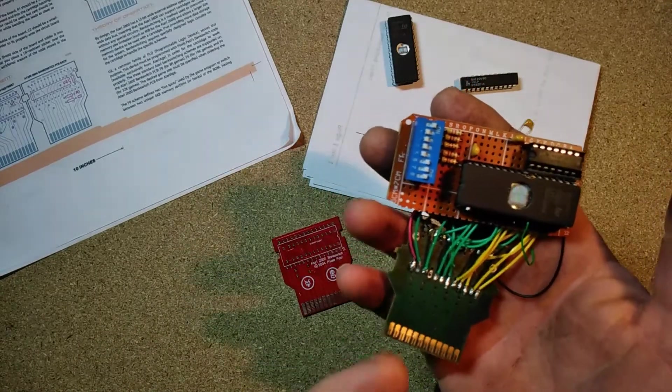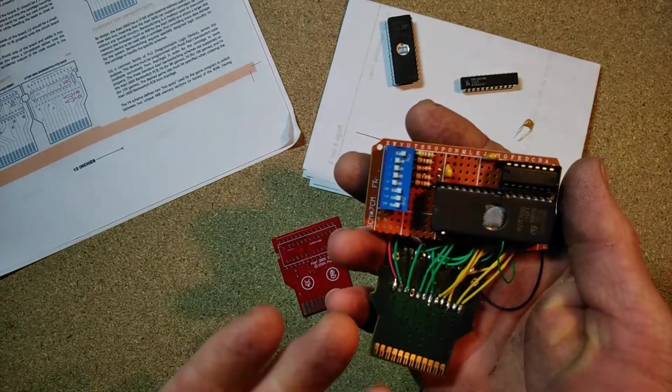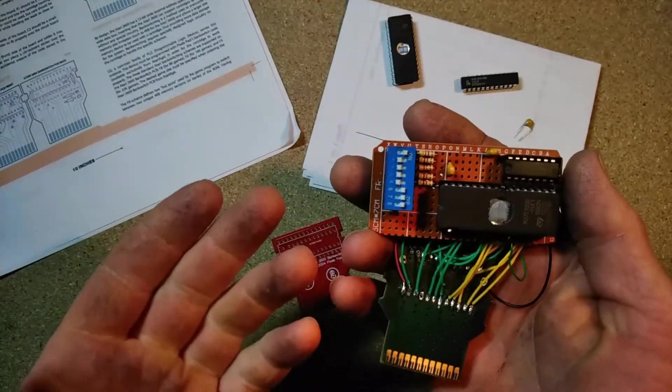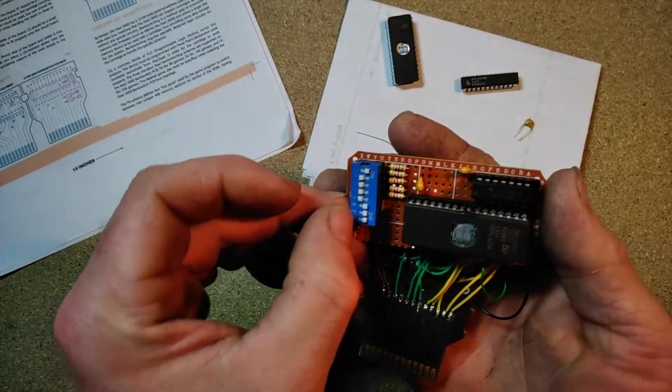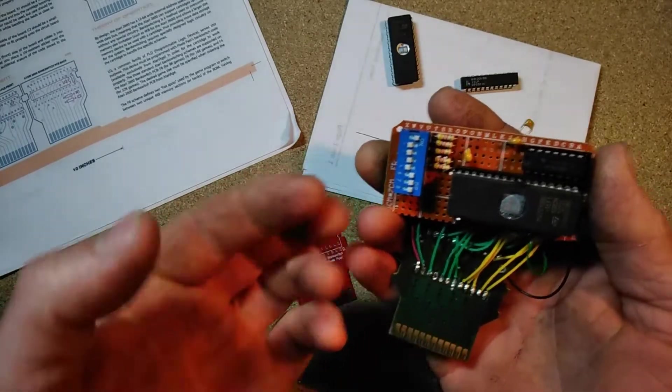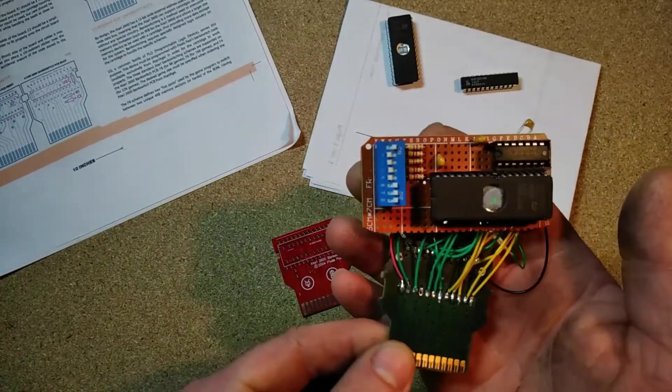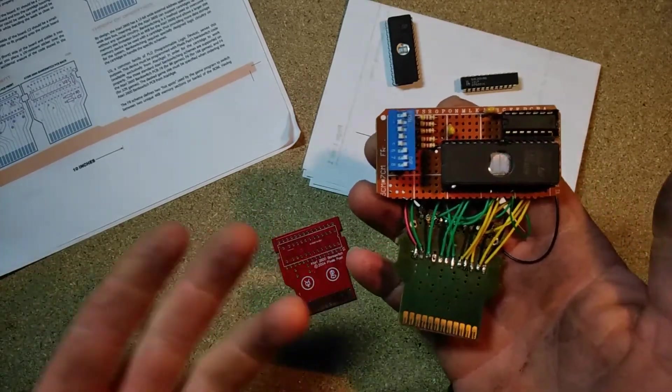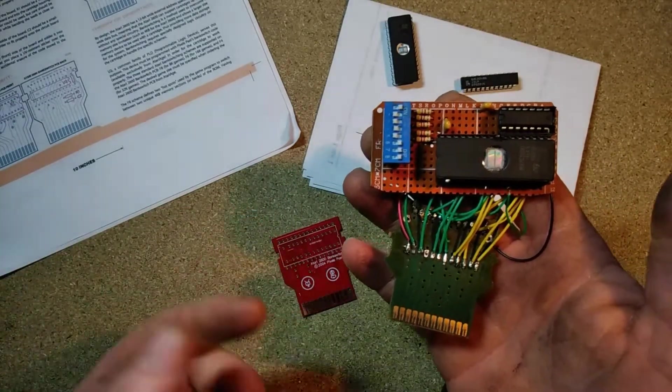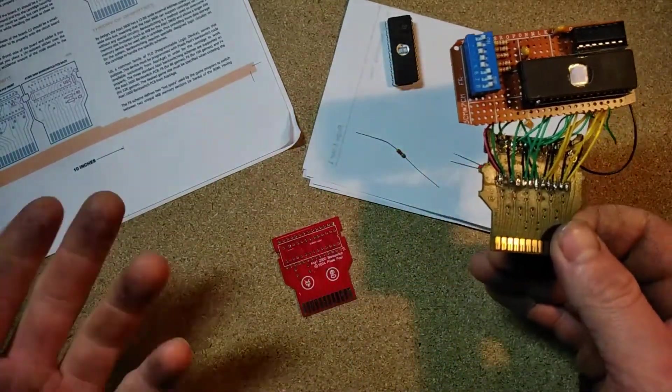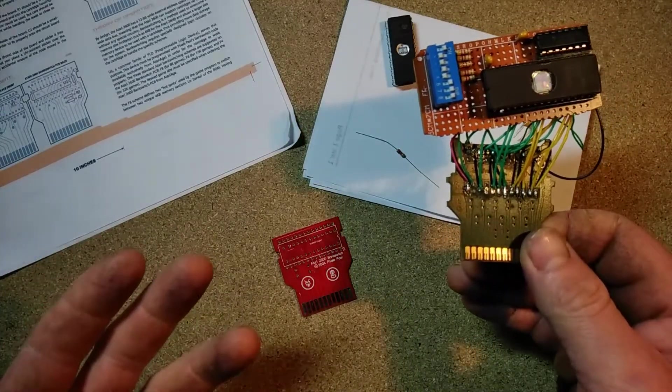This is an Atari multi-cart that can hold up to 32 4-kilobyte ROM images. I can switch between games using these little dip switches and shove it into the Atari and away I go. A lot of games are that size, 4 kilobytes, but if you want to play more complicated games or familiar games like Centipede or Asteroids...